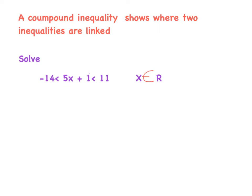Today we're looking at compound inequalities. A compound inequality visually has two inequalities in one expression. Here we have minus 14 is less than 5x plus 1, which is less than or equal to 11. Typically, a compound inequality means the value lies in between two answers — we can think of situations where we're rounding or estimating, saying it's in or around these two values.